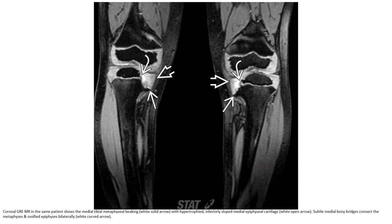This is the MRI coronal image of the same patient. It shows the proximal tibial metaphysis with hypertrophy and inferior sloping of the medial epiphyseal cartilage. A sub-medial bony bridge connects the metaphysis and the ossified epiphysis bilaterally.